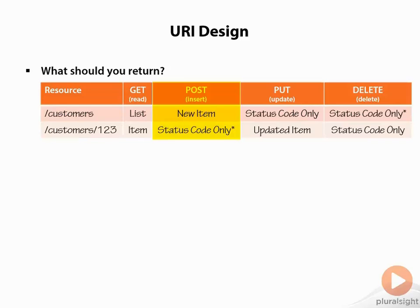If we attempt to POST to an individual item — because we can't POST to an item — we should return a status code, and that status code should be an error status code, probably a 400, indicating that the user of the API has done something incorrect.